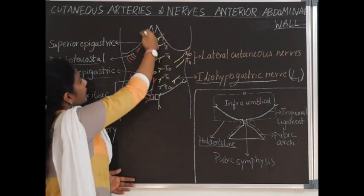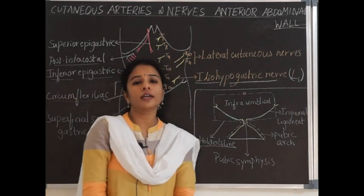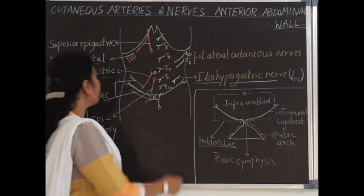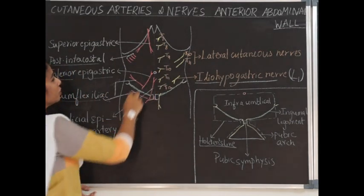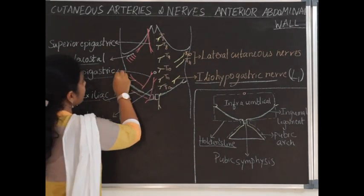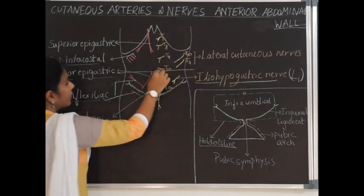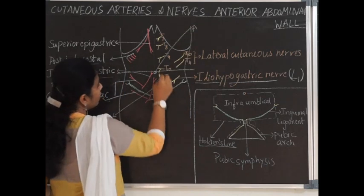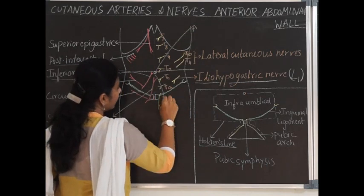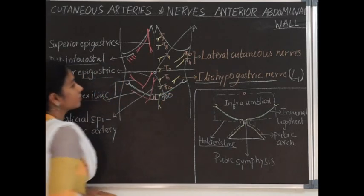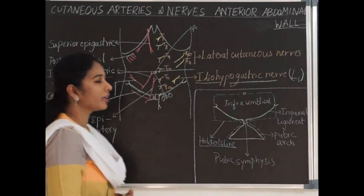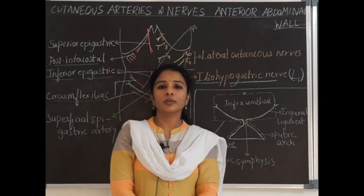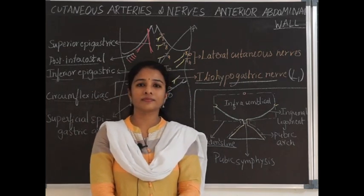Superiorly, the veins drain into the internal thoracic veins. Regarding lymphatic drainage, since the umbilicus is a watershed line, lymphatics above the umbilicus drain into the axillary lymph nodes, while those below drain into the inguinal lymph nodes. This concludes the first session on the anterior abdominal wall. The next session will cover the muscles.